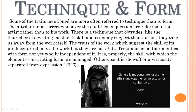Let's start with this long quote. Some of the traits mentioned are more often referred to technique than to form — we talked about skill and costliness, which might relate to a rare technique or expensive material. The attribution is correct: when these qualities are referred to the artist rather than to his work, there is a technique that obtrudes, like the flourishes of a writing master. If skill and economy suggest their author, they take away from the work itself. So if you're reading a novel and it's so obviously the person writing it — like, 'this is so obviously a Cormac McCarthy novel' — it's distracting.